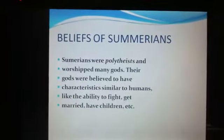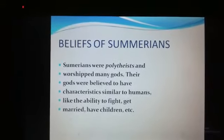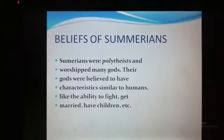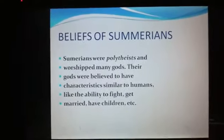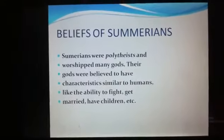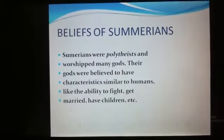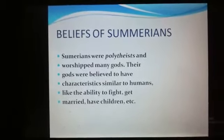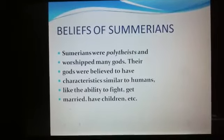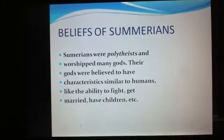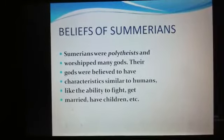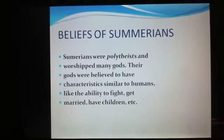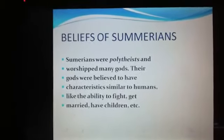Now, which type of beliefs did they have? Like Mesopotamians, Sumerians were also polytheists, meaning they believed in many gods. They also believed that their gods had characteristics similar to human beings, like the ability to fight, get married, and have children. They also had a faith that their gods were immortal — they could not die; they were everlasting.